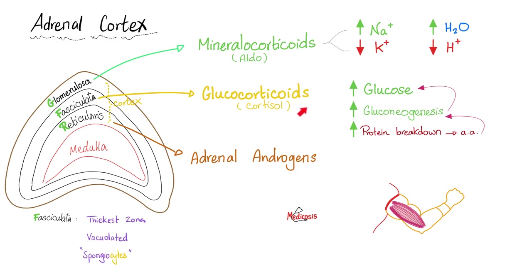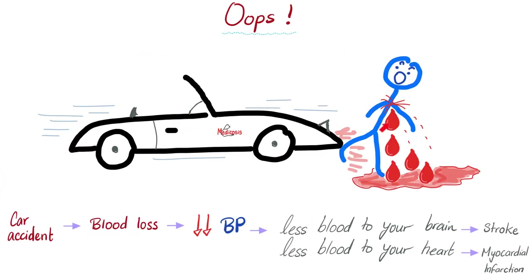Why do we call cortisol the anti-stress hormone? Because it helps you counteract stress. Imagine you woke up in the morning and started driving. It's a stressful day — you're late for work, cussing at other drivers and they're cussing back. That's why you need cortisol in the morning, because there is more stress then. This lovely cortisol makes tons of glucose available in your blood so that you can burn it for energy.